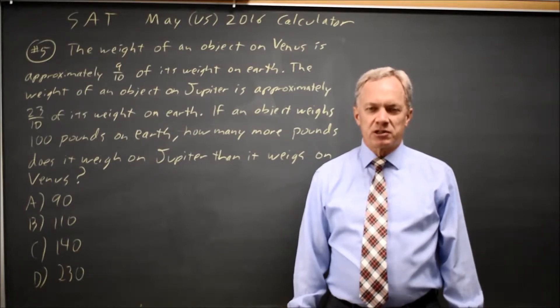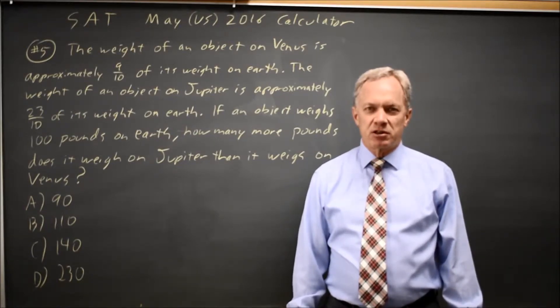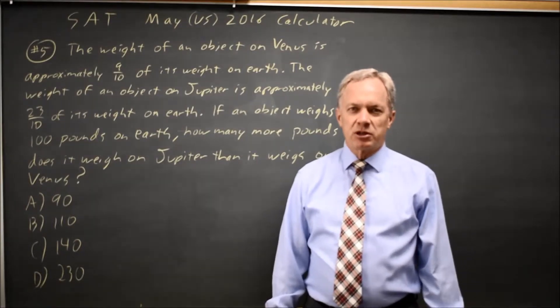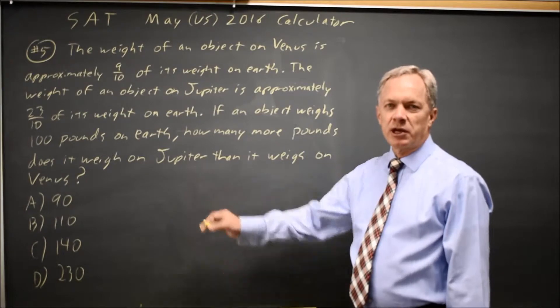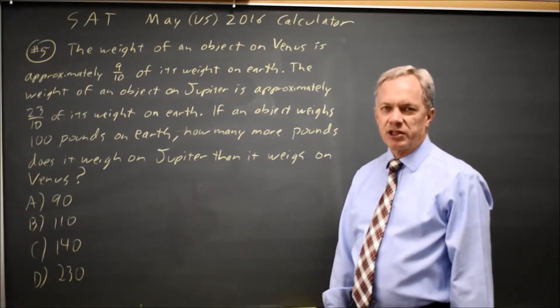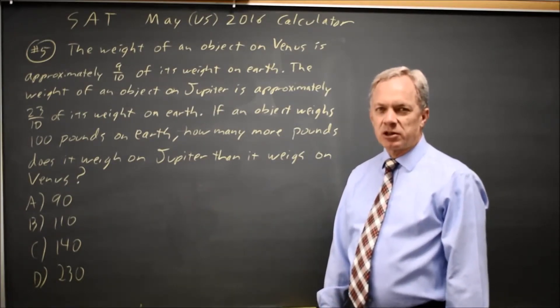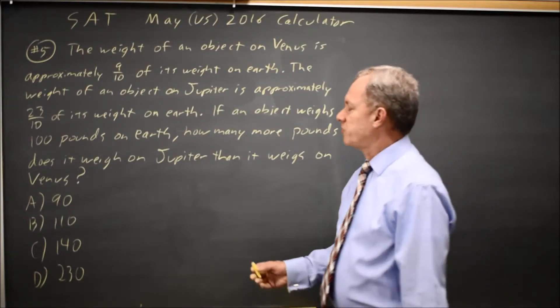College Board gives us a paragraph about the relative weights of objects on Earth, Venus and Jupiter and asks how much more does a 100 pound object on Earth weigh on Jupiter than it does on Venus. If the object is 100 pounds on Earth and weighs 9 tenths as much on Venus,